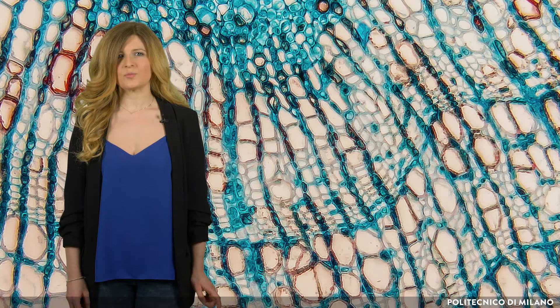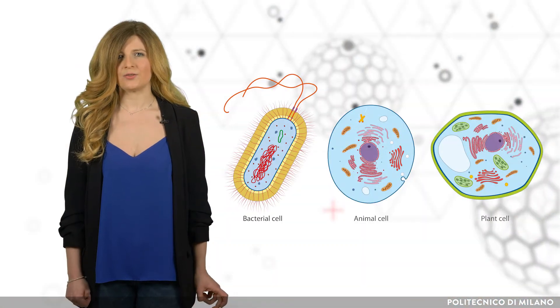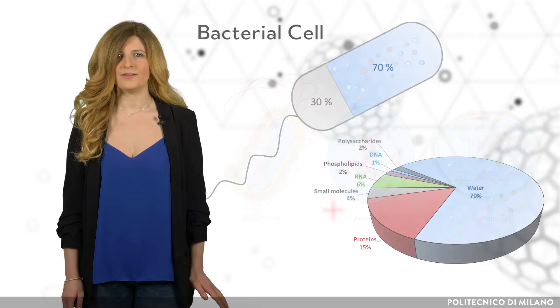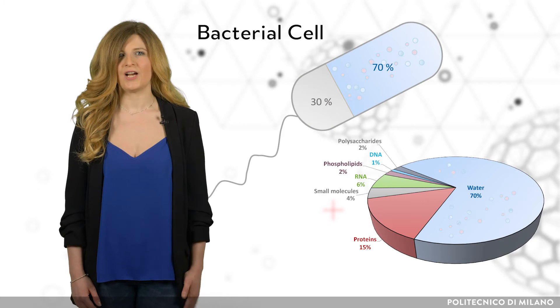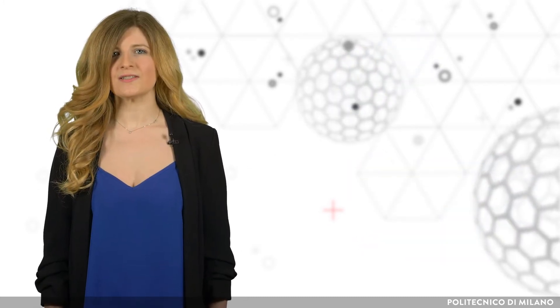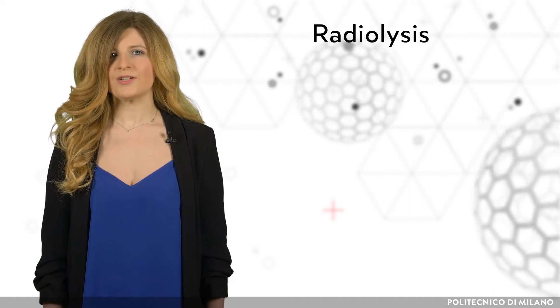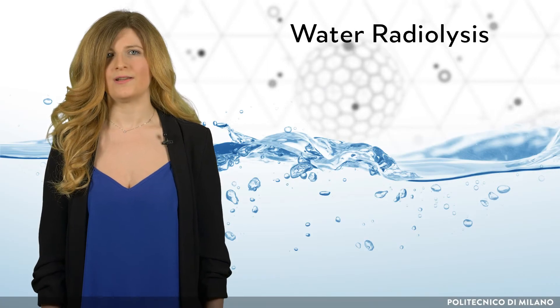When the cell is exposed to radiation, the probability of the radiation interacting with the DNA molecule is very small. However, each cell, like the human cell, consists mainly of water — about 70% — and the probability of interaction with it is much higher. The chemical changes caused by radiation fall under the area of radiolysis. When radiation interacts with water, the phenomenon is called water radiolysis.